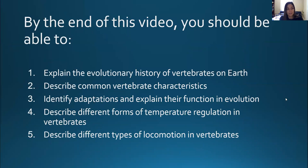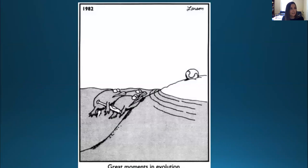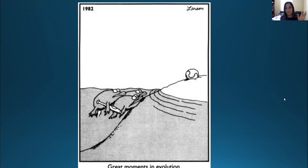Circling back to our first slide about what you should be able to do by the end of the video — go through those five points and make sure you have an idea of each. If anything is fuzzy, go back in the video and review. I like to end videos sometimes with a joke or cartoon. As we go through the taxa, we'll talk about evolutionary changes between them, and there's a Far Side cartoon that clearly explains how vertebrates got from the water to land — you don't need any other explanation. Thank you so much for listening, I look forward to seeing you in class!